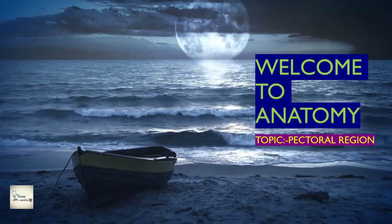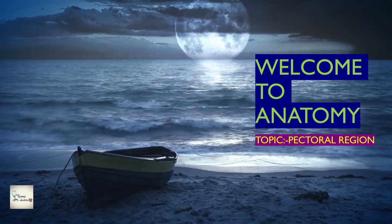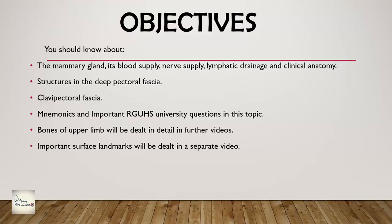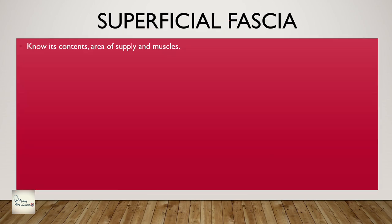Hello guys, welcome to MBBS Tutor and welcome to the pectoral region class today from anatomy. The objectives are: you should know about the mammary gland, its blood supply, nerve supply, lymphatic drainage, and clinical anatomy. On top of that, you need to know about the structures in the deep pectoral fascia and the clavipectoral fascia - these are just important questions with some mnemonics. The bones of the upper limb and importance of landmarks will be dealt with later in a separate video.